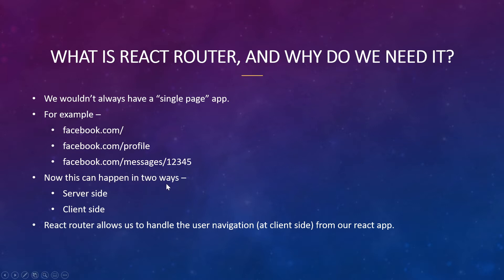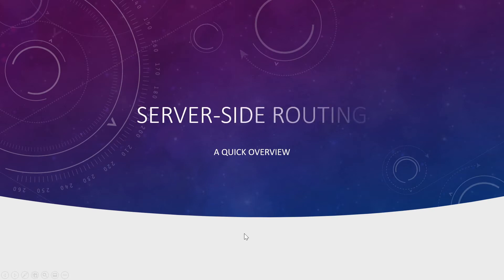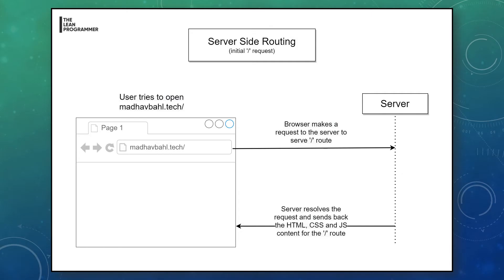This routing can happen in two ways: server-side routing and client-side routing. Both have their own advantages and disadvantages. Let's jump into each one. Server-side routing is the old-school method of routing — this is how things worked traditionally. For example, when someone tries to open madhavbehel.tech, the browser makes a request to the server to serve the initial route.